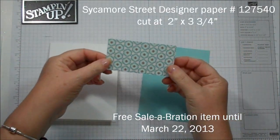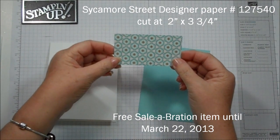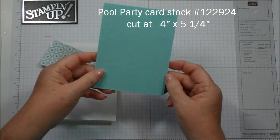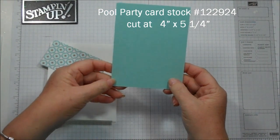And then we're using the Sycamore Street Designer Paper, and this is cut at 2 by 3 3/4. And then we're using a piece of Pool Party cardstock, and this is cut at 4 by 5 1/4.